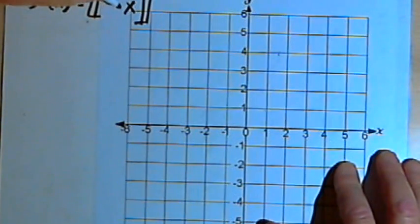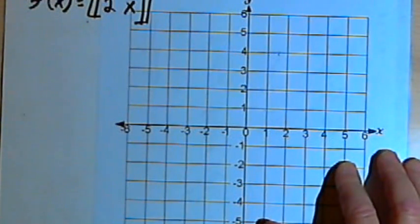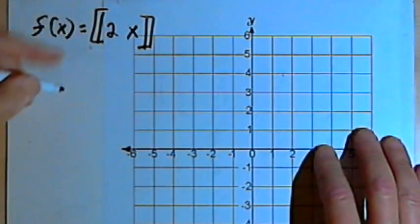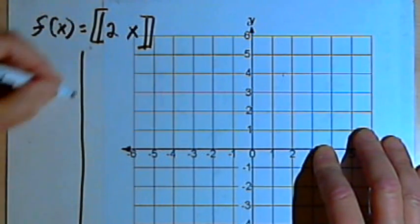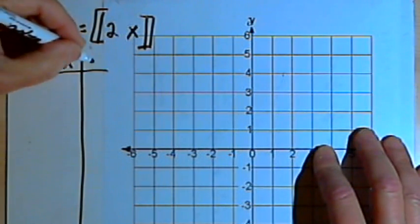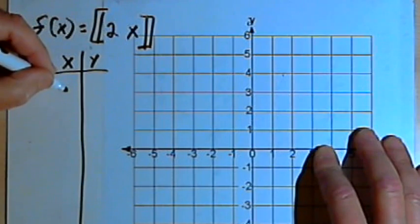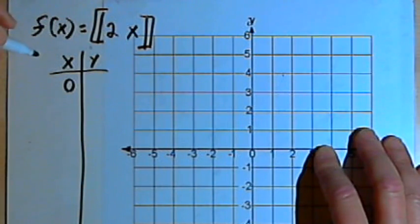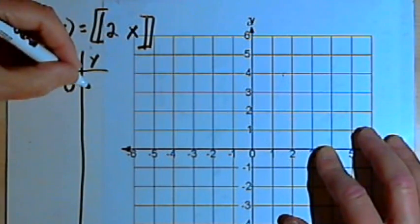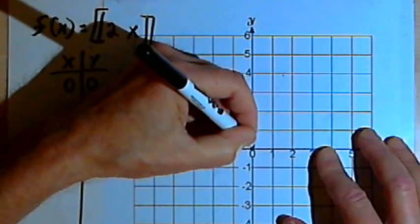Let's look at another example and see if this holds true. So let's try f equals the greatest integer value of 2x. So we'll fill in the table of values. When x equals 0, then 2 times 0 is 0. So once again, I can start at the origin.